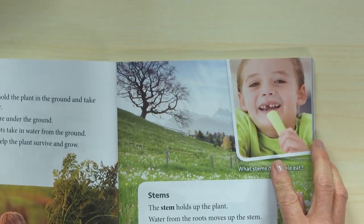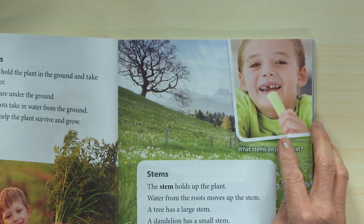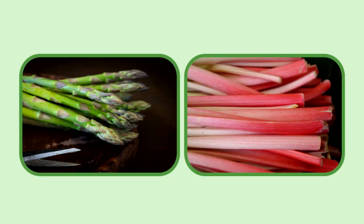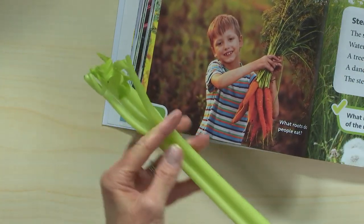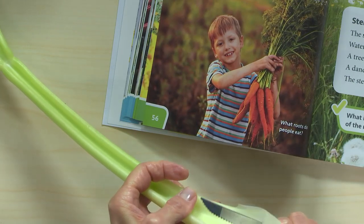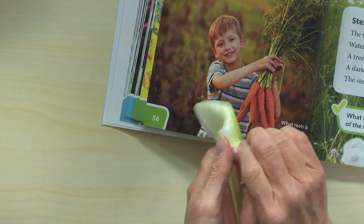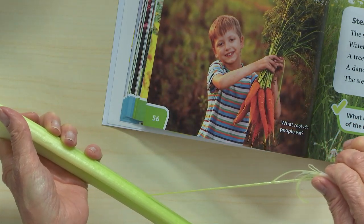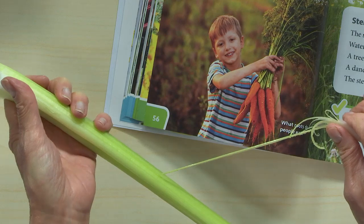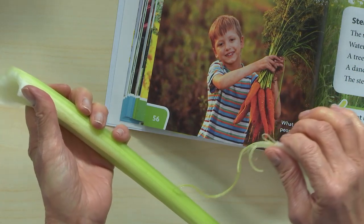This child is eating celery — it's a stem. Can you think of any other stems that people eat besides celery? Well, asparagus is a stem, and rhubarb is a stem. Now I've got some celery. This piece of celery is a stem and you can see the leaves at the top of it. Have you ever noticed when you're eating celery that there are some strings? Those strings are actually little tubes, and water for the plant moves up from the roots through these little tubes in the stem.